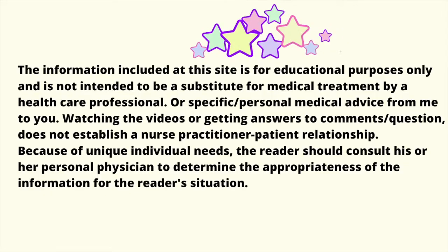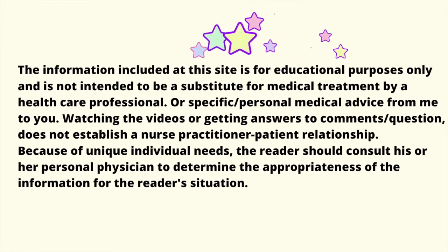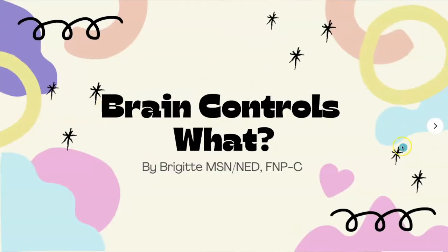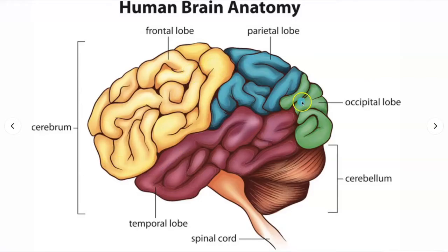This video is purely for educational purposes only. Please always consult your primary care physician if you have any questions or concerns. So the brain controls what? The cerebrum is the largest part of the brain and it performs higher functions. The cerebellum is located under the cerebrum, and the brainstem acts as a relay center and is responsible for basic life functions.